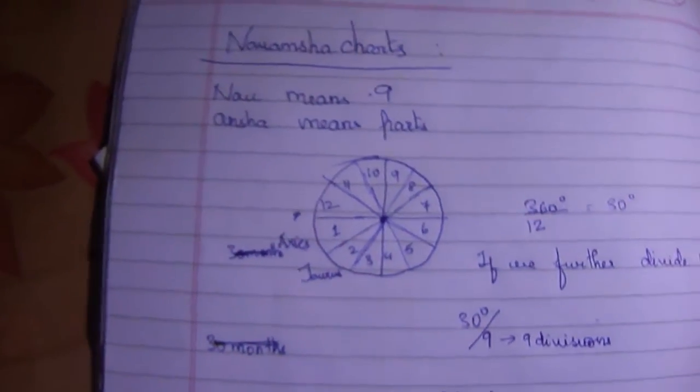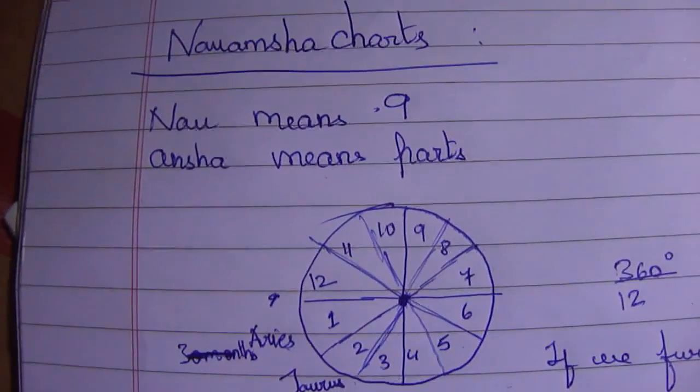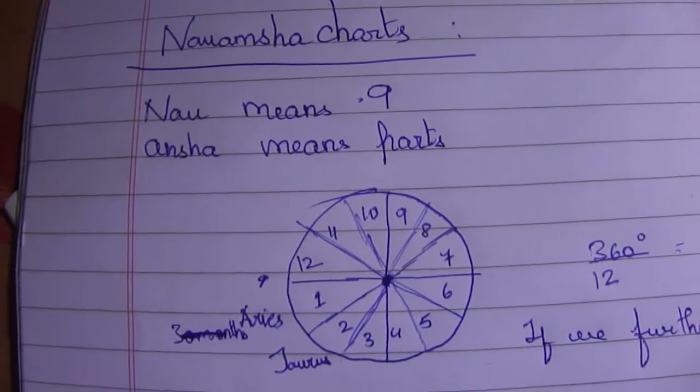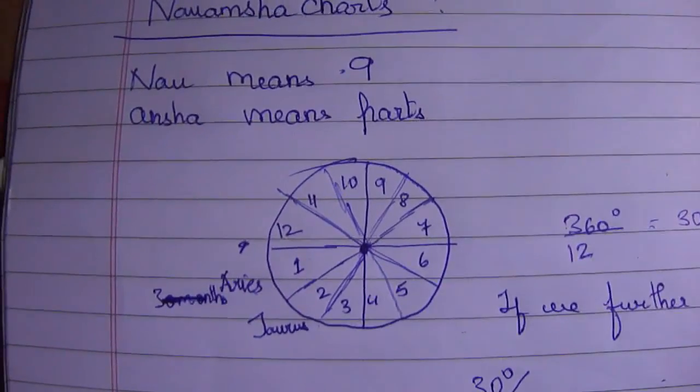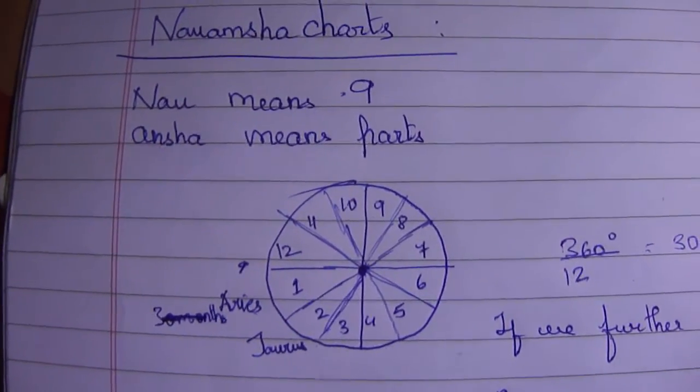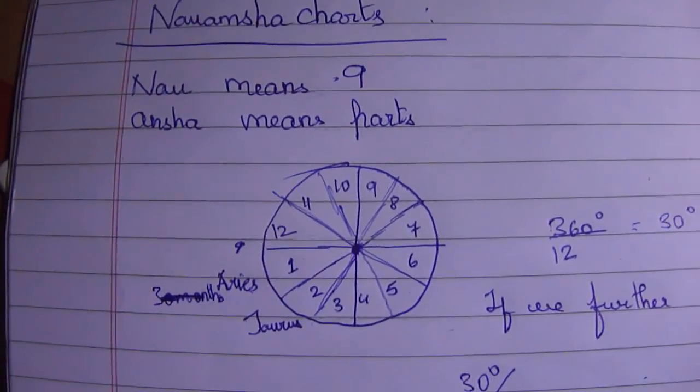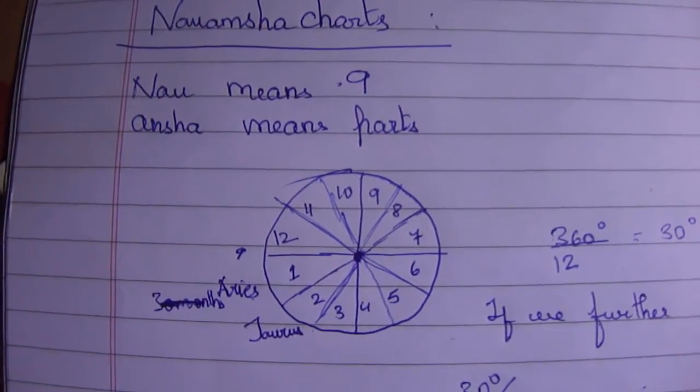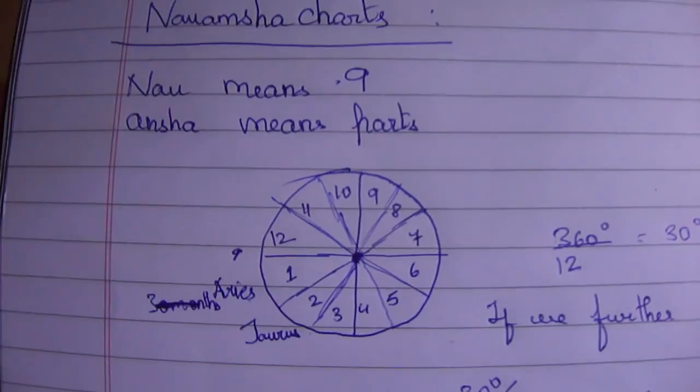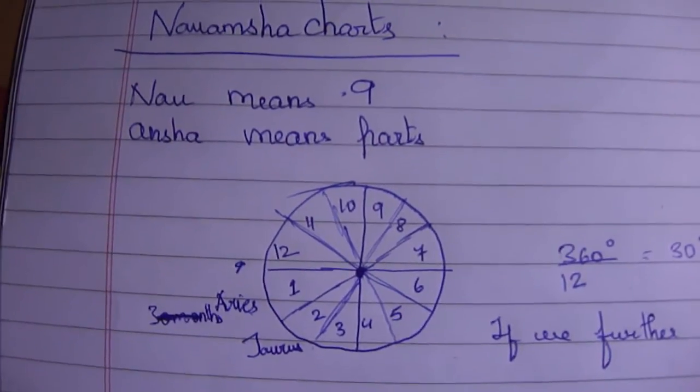Good morning everyone, this is another session on astrology and we will be discussing Navamsha Charts, what they mean and how to understand them. We'll go into depth in later videos, but let us try to understand what Navamsha means. Nav means nine and Ansha means part.